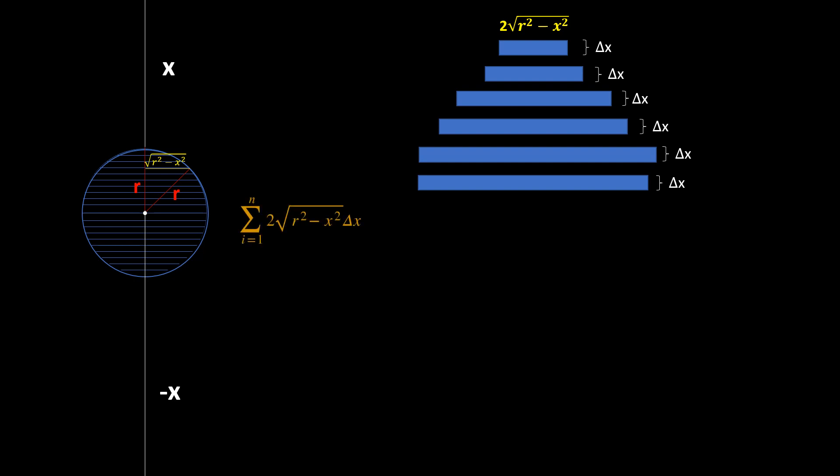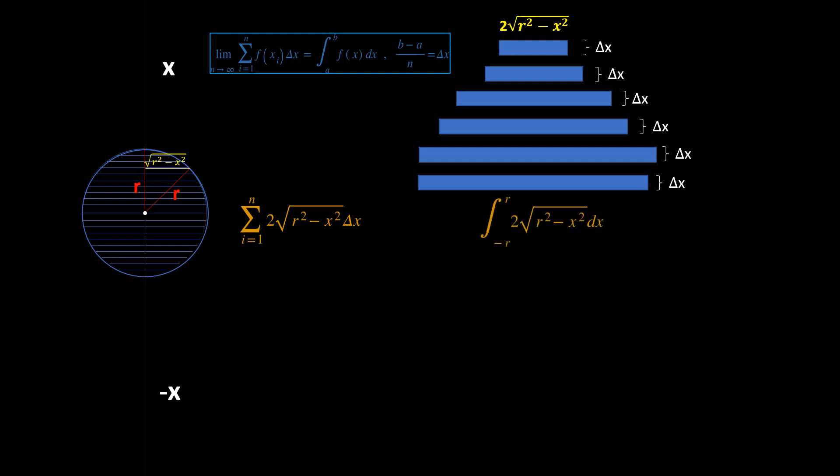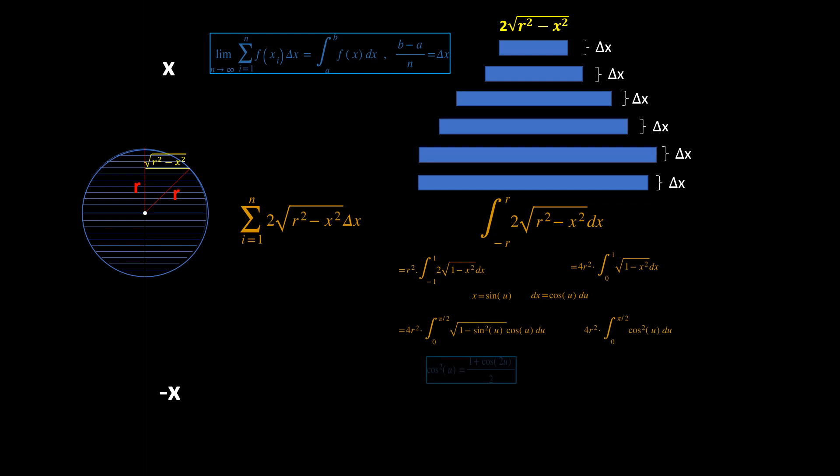So the area of the circle is the sum of the areas of all the little rectangles: the sum from i equals 1 up to n of 2 times the square root of r squared minus x squared times delta x. This approximation gets better and better as delta x gets smaller and smaller, becoming the infinitesimal distance dx. So we can replace the sum by the integral from negative r to positive r of 2 times the square root of r squared minus x squared dx. This is because the limit as n goes to infinity of the Riemann sum equals the integral from a to b of f(x) dx. That boils down to pi r squared — you can check this yourself.